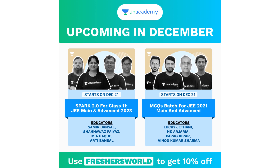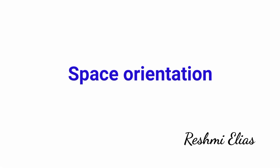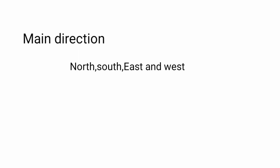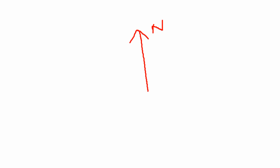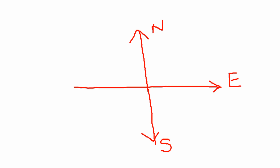We make our concept of direction after seeing the position of the sun. The direction which works according to sunrise and sunset is known as the main direction. There are four main directions: north, south, east, and west. On a paper, always mark the top position as north, the downward direction as south. If you are facing north, your right will be east and left will be west.